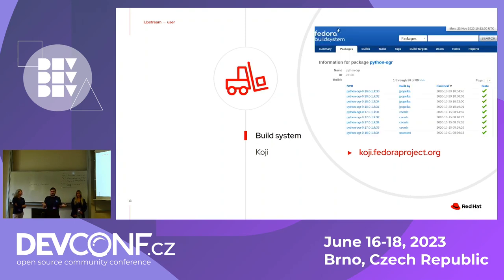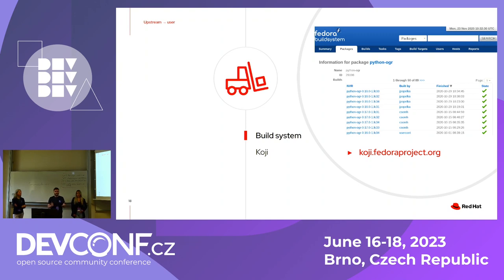We still don't have the packages yet. We have sources and scripts that can build them, but not the packages themselves. So we have a build system called Koji. You can trigger a build there — it takes the spec file, takes the sources, and produces an installable RPM package that we can install and use.